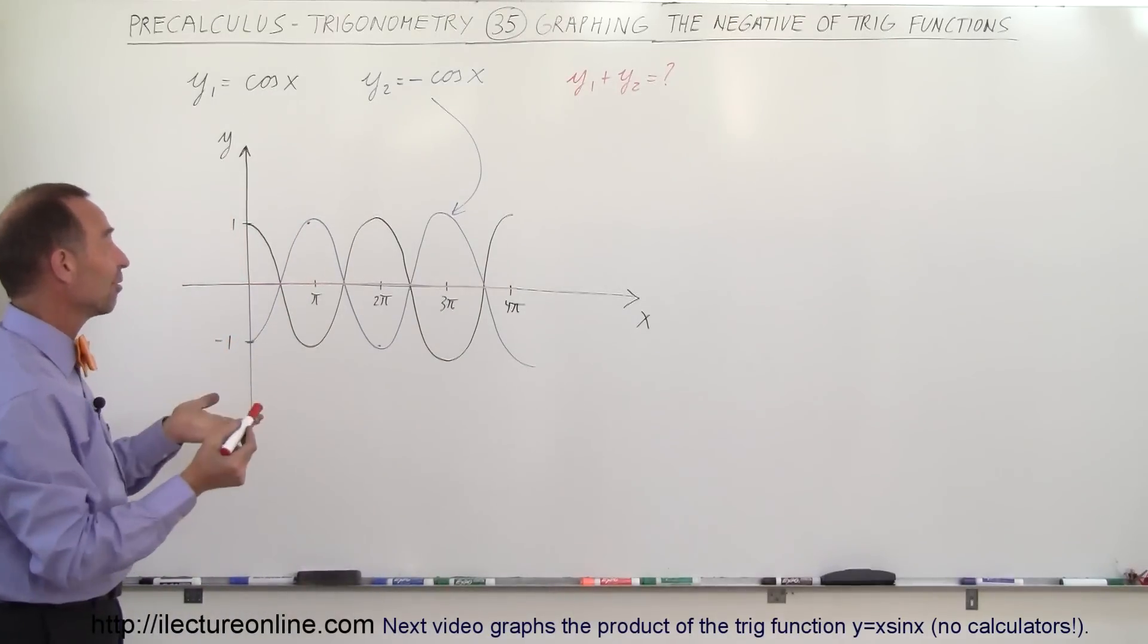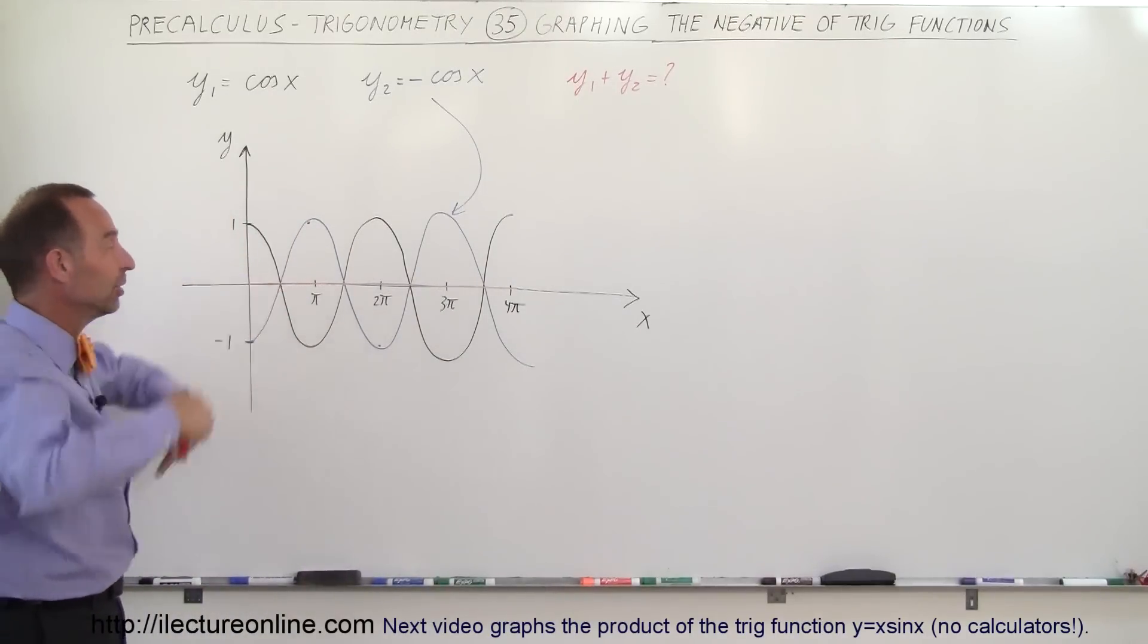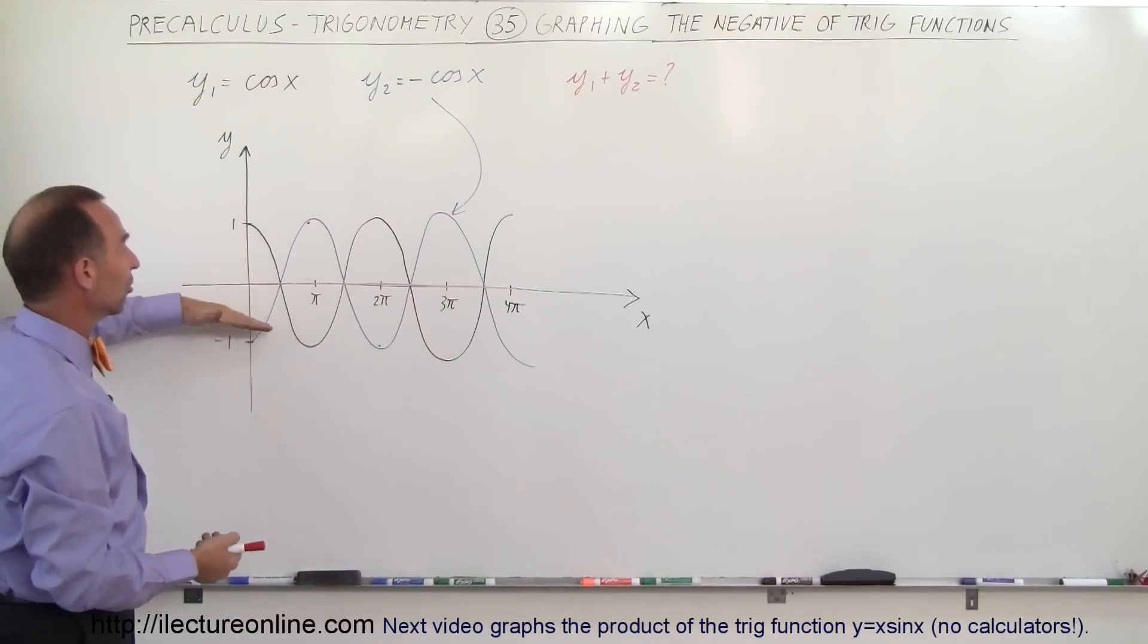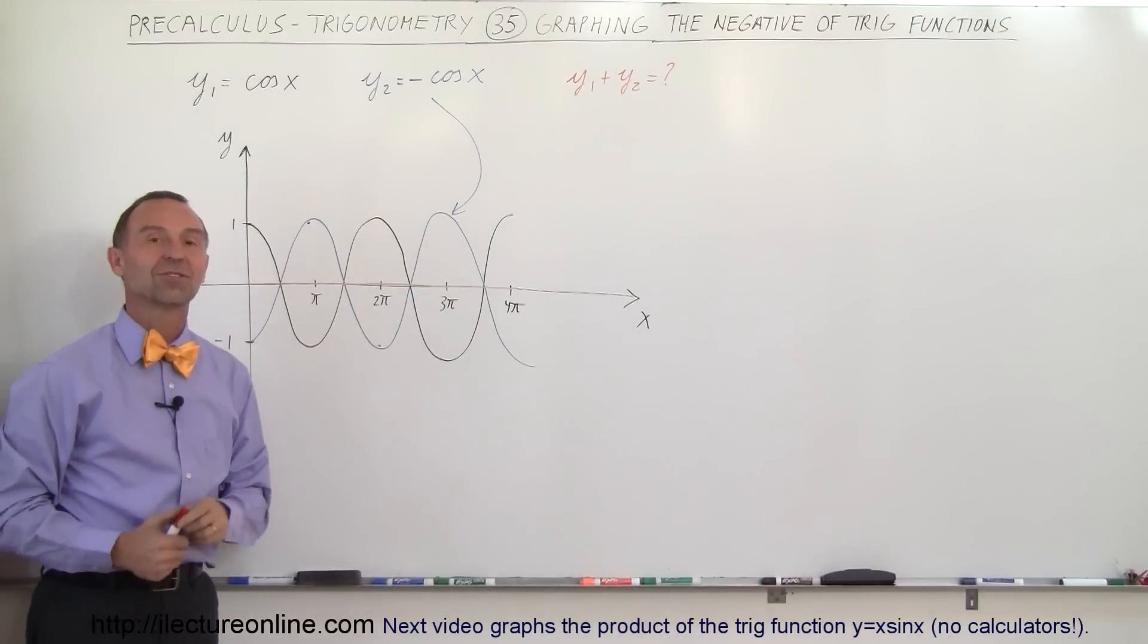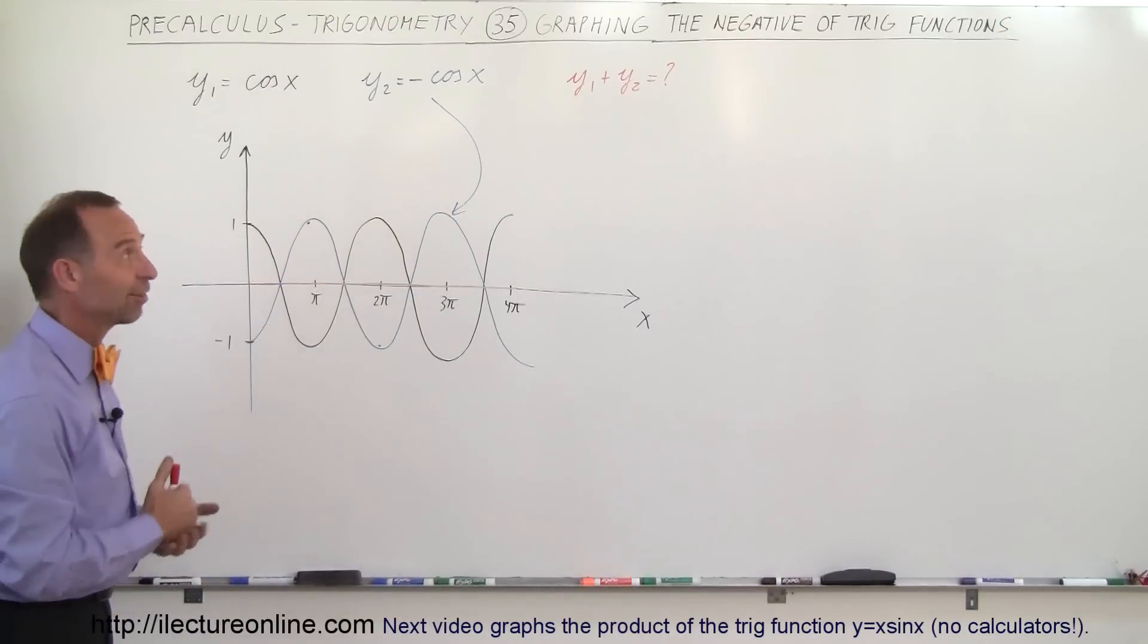So now you know how to graph the negative of a function. You simply flip it over and you have the result that you're looking for. And if you then add a positive and negative function together, notice you get zero as the end result. That's how we do that.